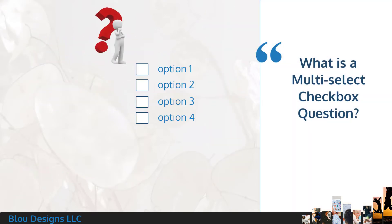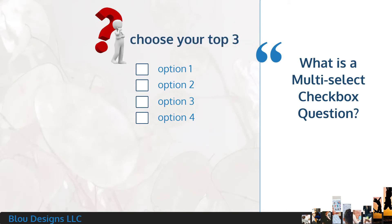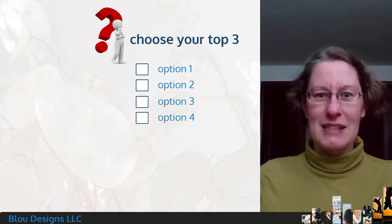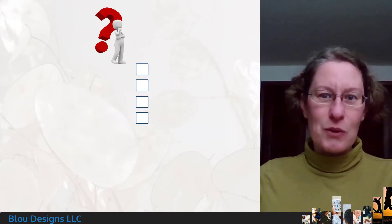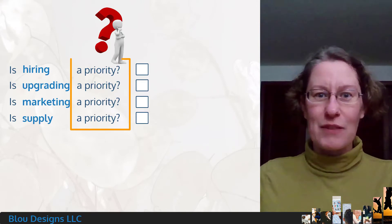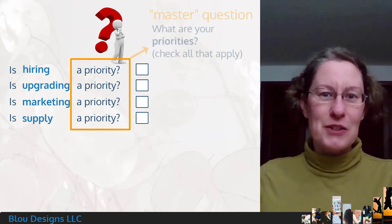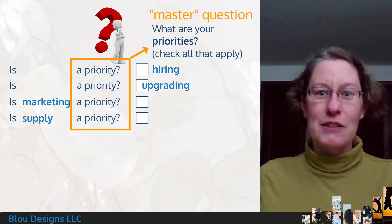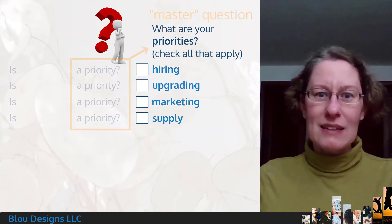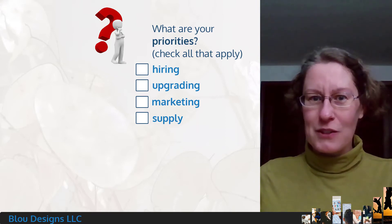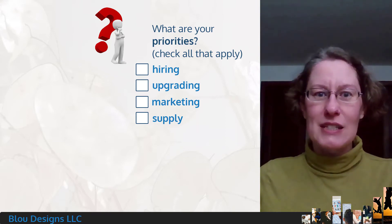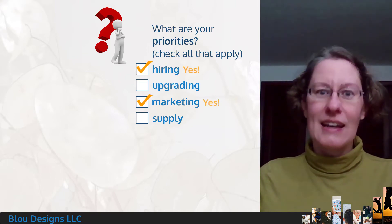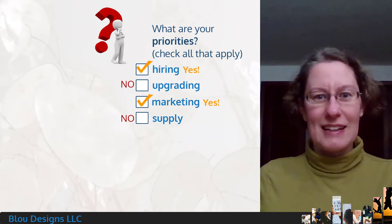If you've ever come across a survey question that lets you check all that apply or choose your top three, you're already familiar with the multi-select checkbox. This question type basically groups together a related set of yes-no style questions under a single master question. Each checkbox option represents one of the yes-no questions that asks, with respect to the master question, is this characteristic true? A checked checkbox indicates a yes, and an unchecked checkbox indicates a no.